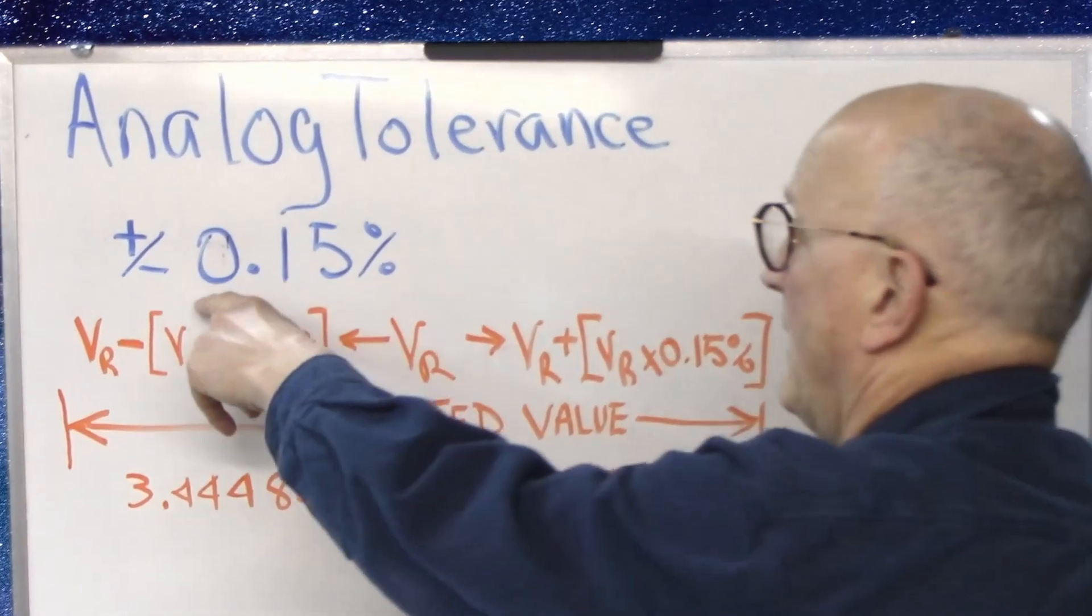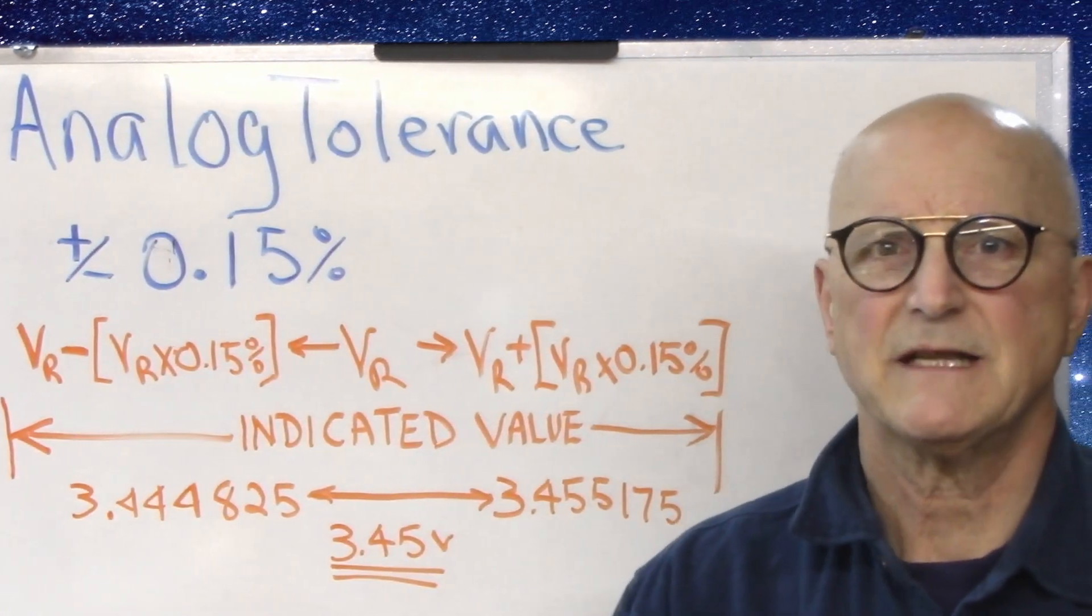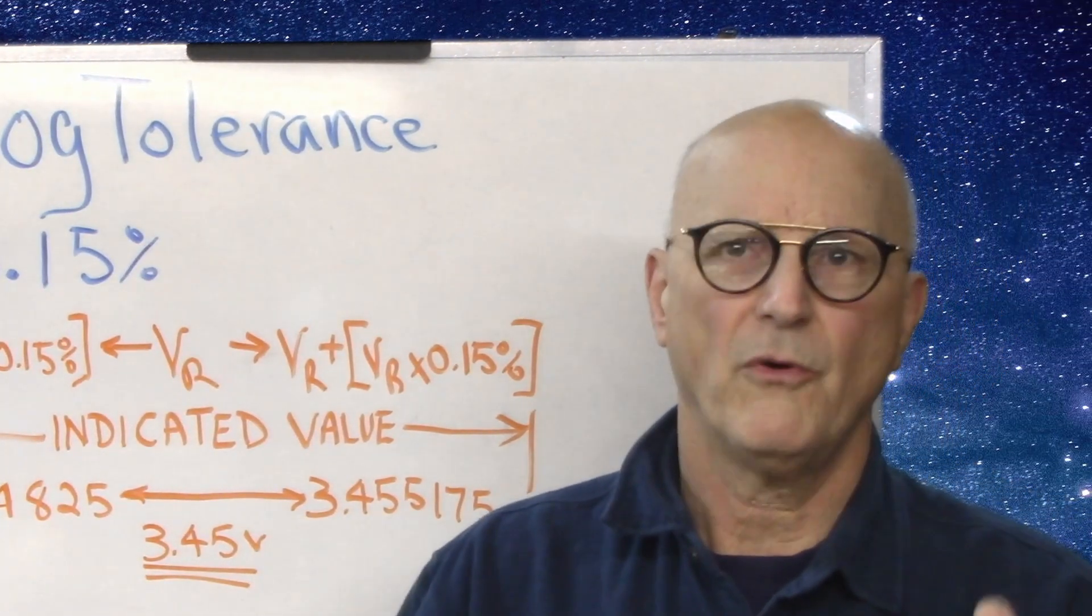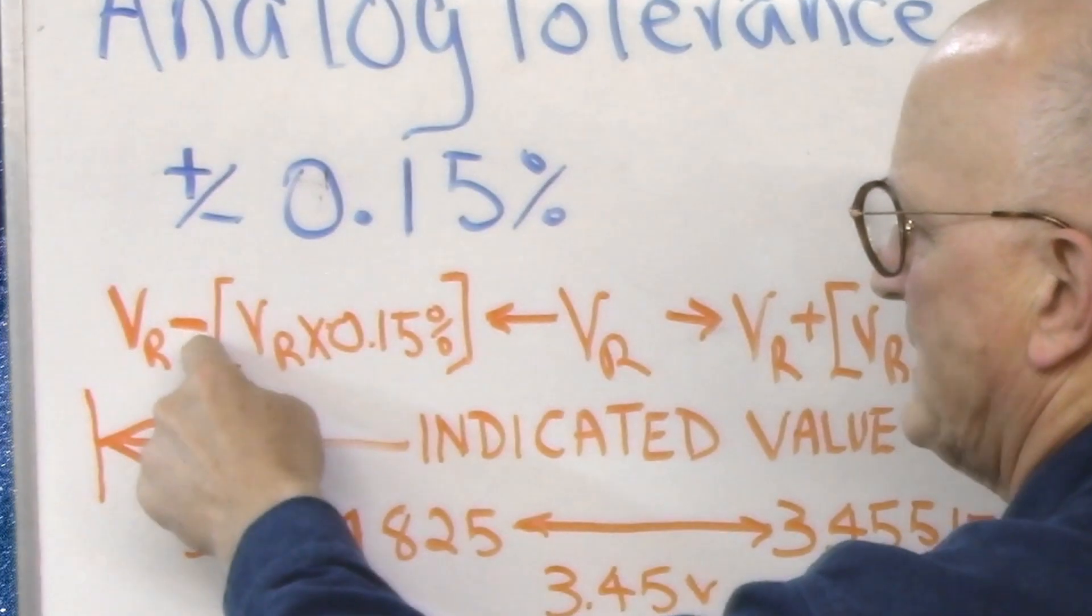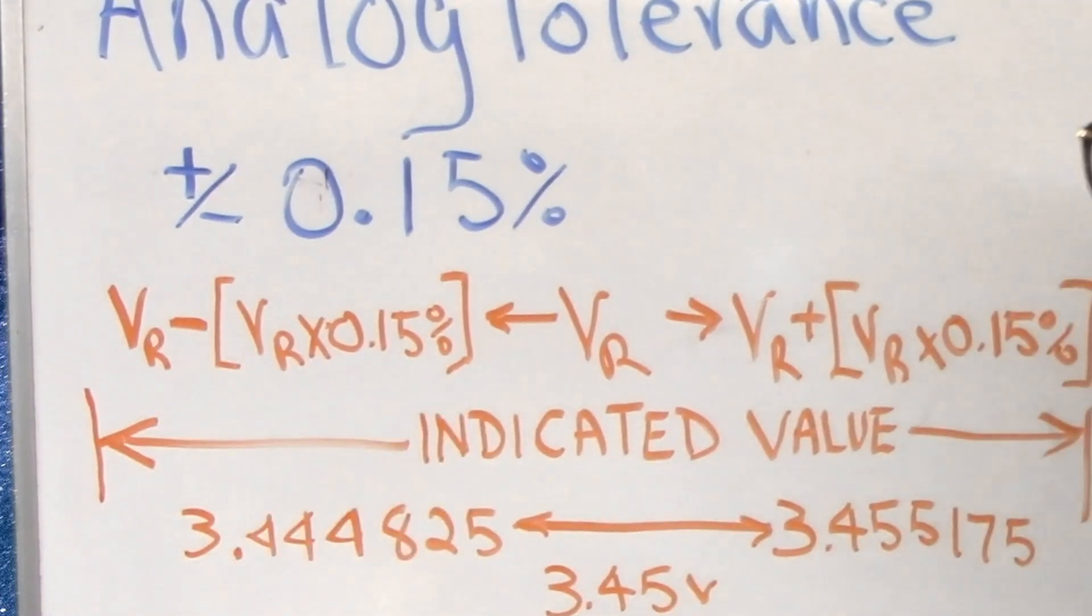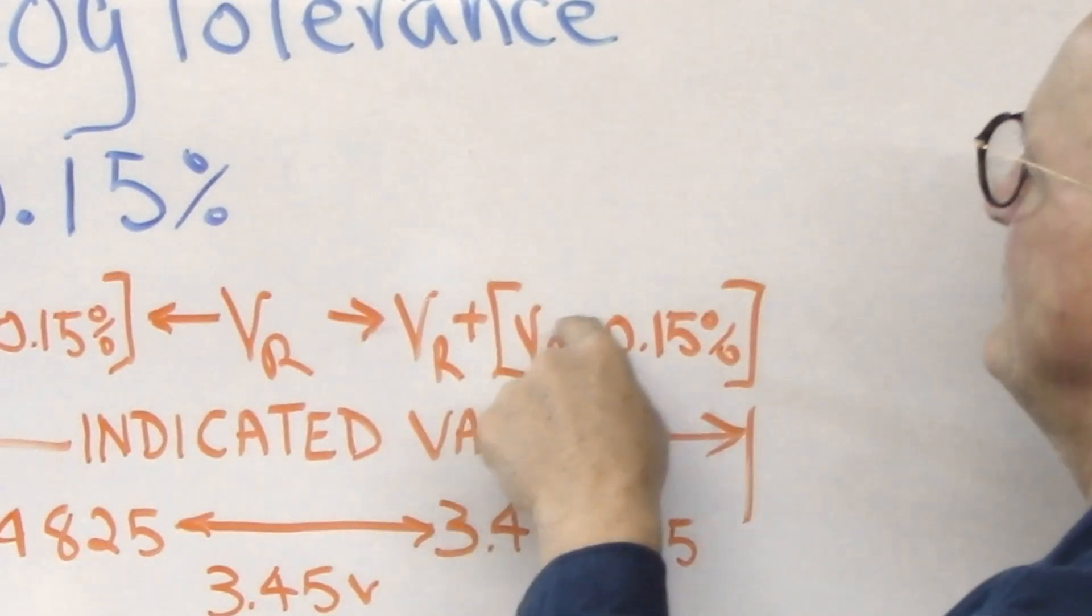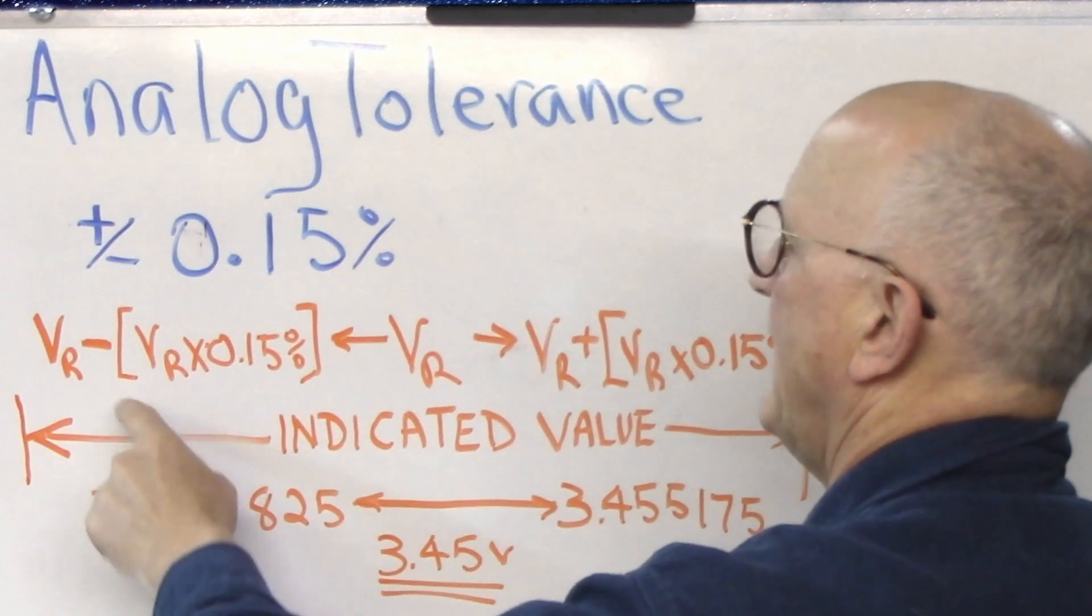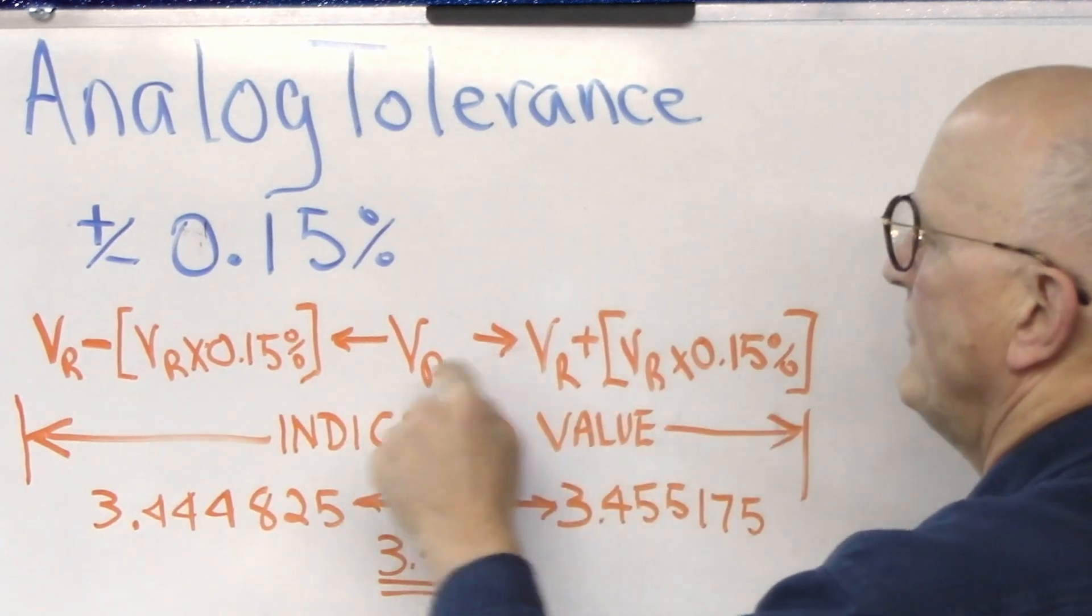Here we have the analog portion of our measurement tolerance, plus or minus 0.15 percent. What this means is that the reading we see on the display could be a number anywhere in the range of plus or minus 0.15 percent of the real value. This means that we take the real value and we subtract this quantity, the real value times 0.15 percent from it to get the low end of our range. And we take the real value plus that same number, the real voltage times 0.15 percent. And our DVM could indicate anything from this voltage to this voltage relative to the real voltage that's in the middle.